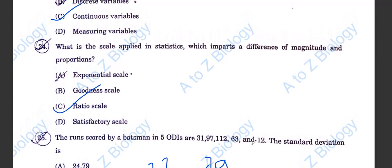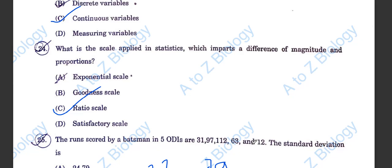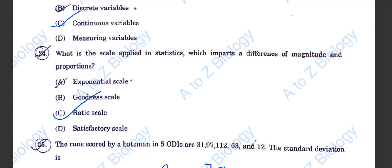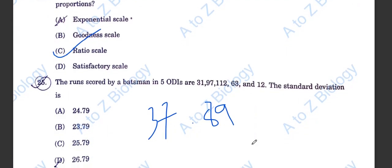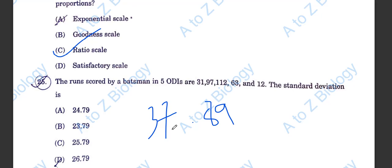The runs scored by a batsman in 5 ODIs are 31, 97, 112, 63, and 12. Calculate the standard deviation. After calculating this, the standard deviation will be 37.89. But it is not in the option list. Its answer is 37.89.